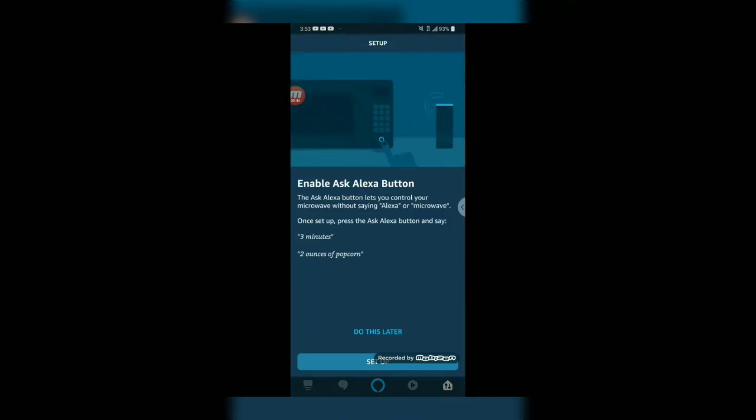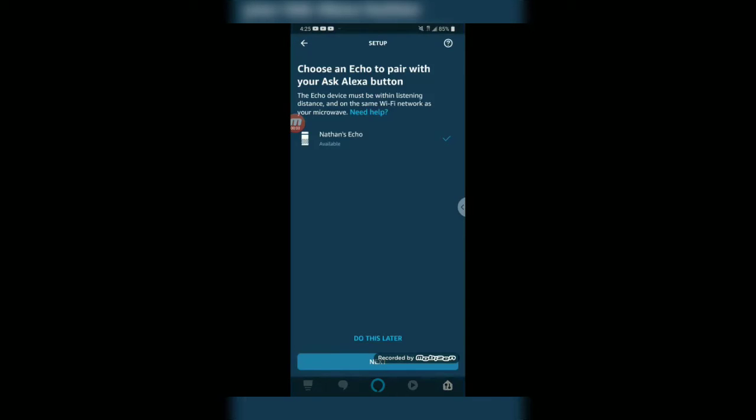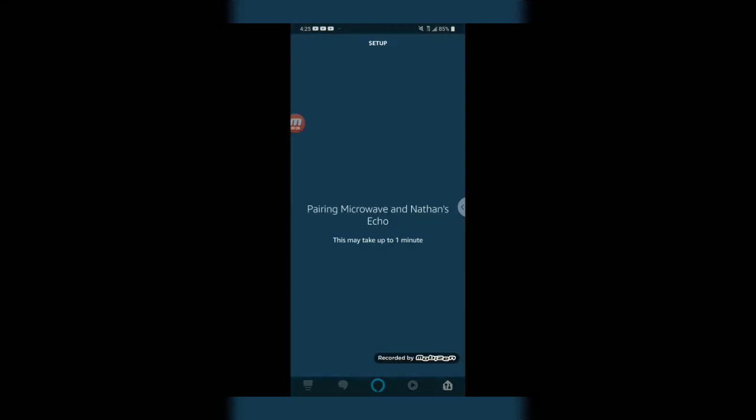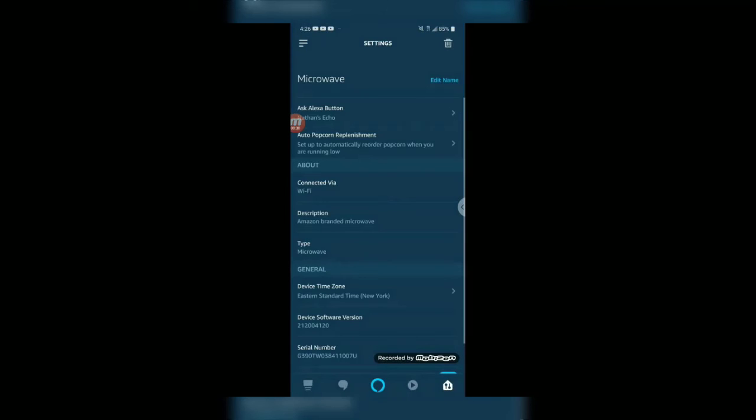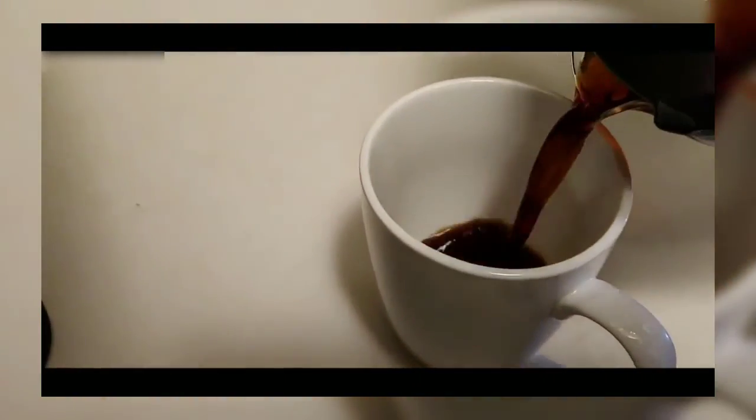Now the next thing you're going to do is enable the ask Alexa button. What that does is on the front of the microwave, the blue button is the Alexa button. If you push that button when this is activated, you don't have to say Alexa or microwave. You just push the button, Alexa turns on and listens for an instruction. So you push that button and then you can say three minutes or two ounces of popcorn or heat up one cup of coffee or something like that. Success! You have successfully set your microwave up on your network to operate with Alexa. Now you can use the Alexa commands or the Alexa button on the microwave to give your microwave commands on reheating or defrosting and things of that nature.